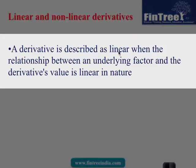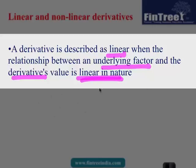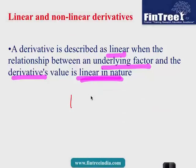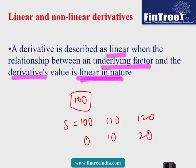A derivative is described as linear when the relationship between the underlying factor and the derivative's value is linear in nature. For example, in a forward contract with a price of 100: when the spot price is 100, payoff is 0; if it increases by 10%, we have an increase of 10; if it becomes 120, we have a value of 20. That means it is behaving in a linear fashion.